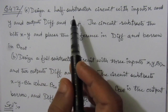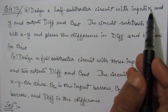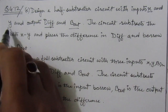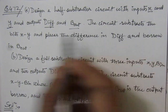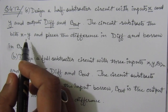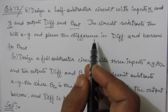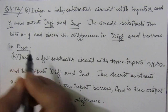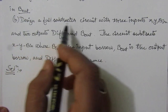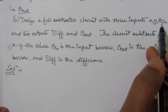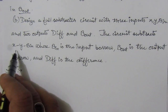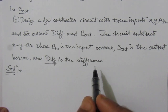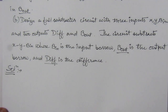This problem has two parts. In the first part, we have to design a half subtractor circuit where X and Y are the inputs, and the outputs are the difference (DIFF) and B_out. The circuit subtracts Y from X and places the result in DIFF; the borrow is denoted by B_out. In the second part, we design a full subtractor circuit with an additional input B_in (borrow in), computing X minus Y minus B_in, placing the result in DIFF and the borrow in B_out.